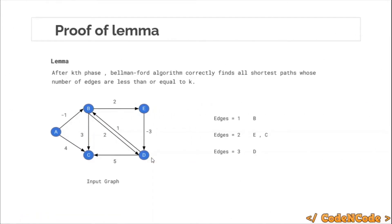So if this is the graph — the graph from the previous lecture — node A is the source node. The shortest distance to node B comprises only a single edge, so from A the shortest path to B contains only one edge. For nodes C and E, the shortest distance to E from the source node is a path containing two edges. Same goes for C — the path that contains the shortest distance from A to C also contains two edges.